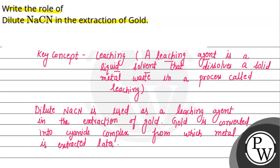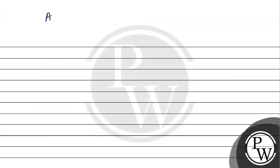So dilute sodium cyanide, extraction of gold में leaching agent का काम करता है। यह जो gold metal का waste है उसको dissolve कर देता है, और उसका cyanide complex बन जाता है, जिसमें से बाद में हम metal को extract करते हैं।